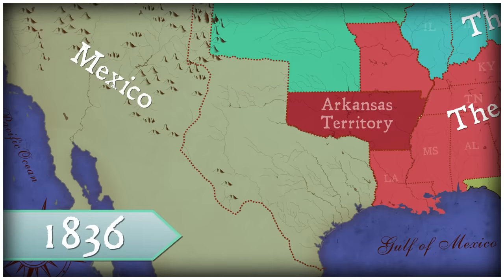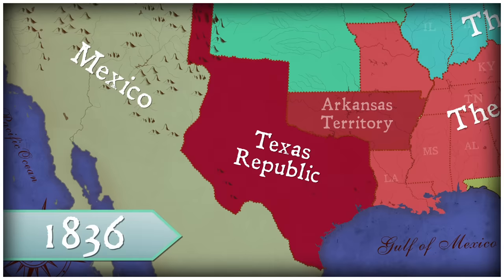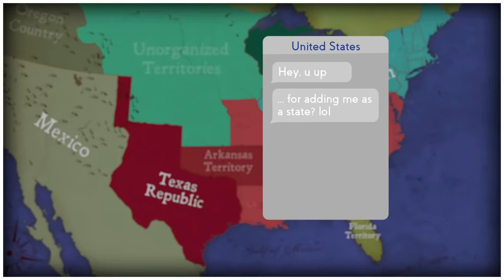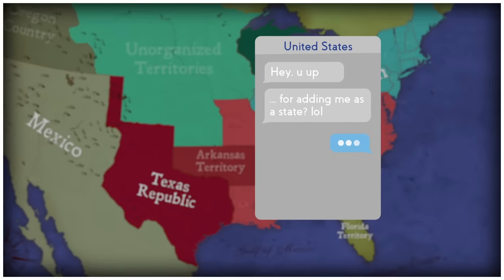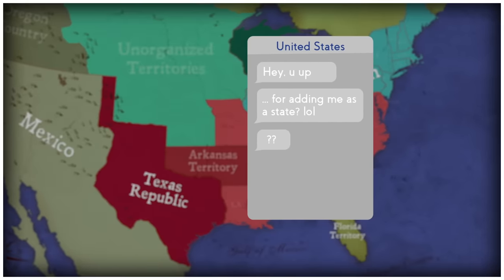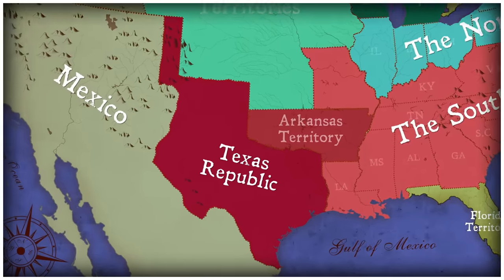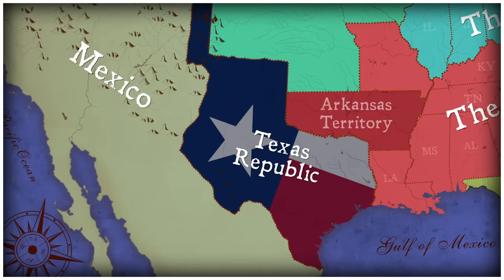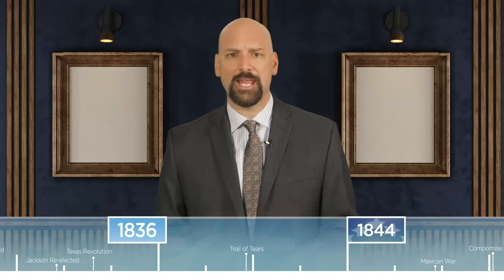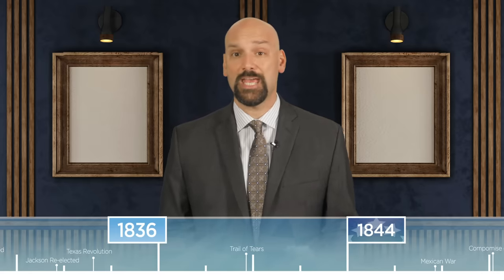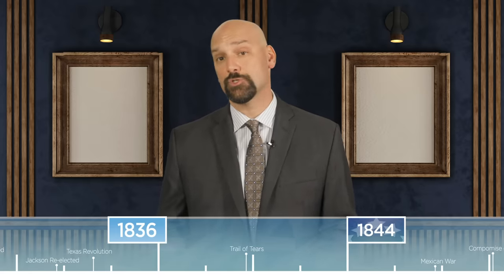This is when Texas won its independence from Mexico and established the Texas Republic. At the time, Texas wanted to become a state, but the U.S. feared a war with Mexico. So Texas became the Lone Star State, waiting for the U.S. to annex them. Annex means to add as an extra part — in this case, it meant the United States adding Texas to the country as a new state.